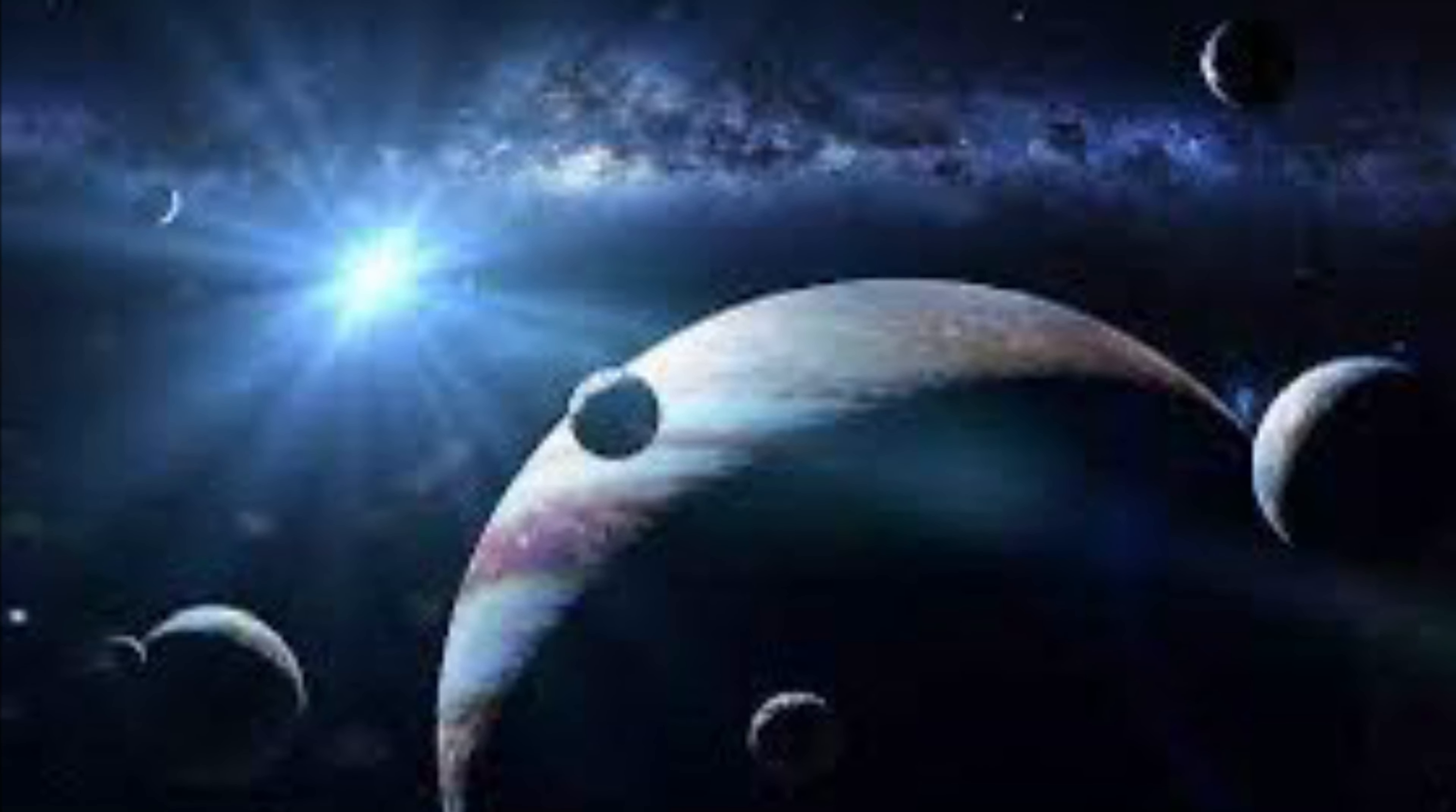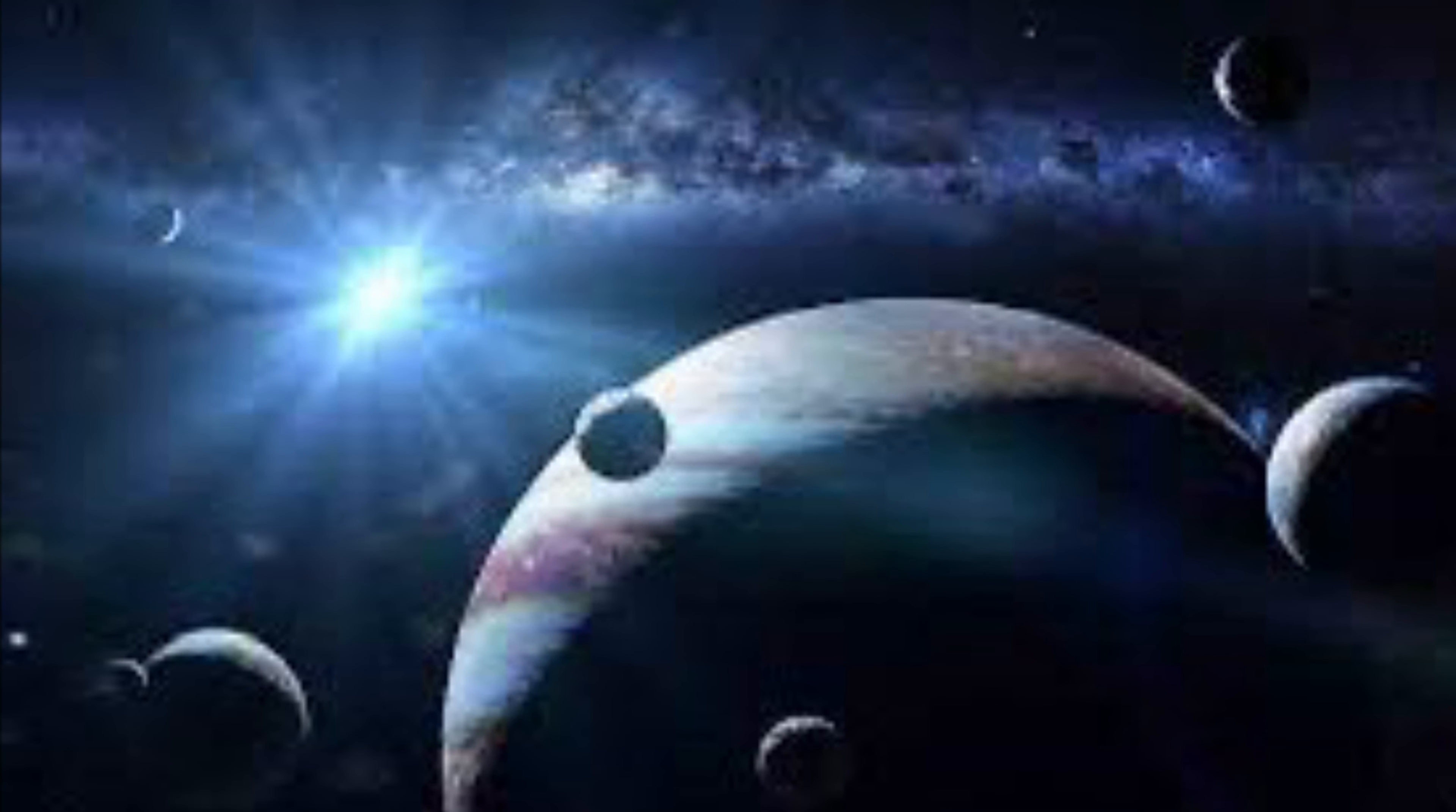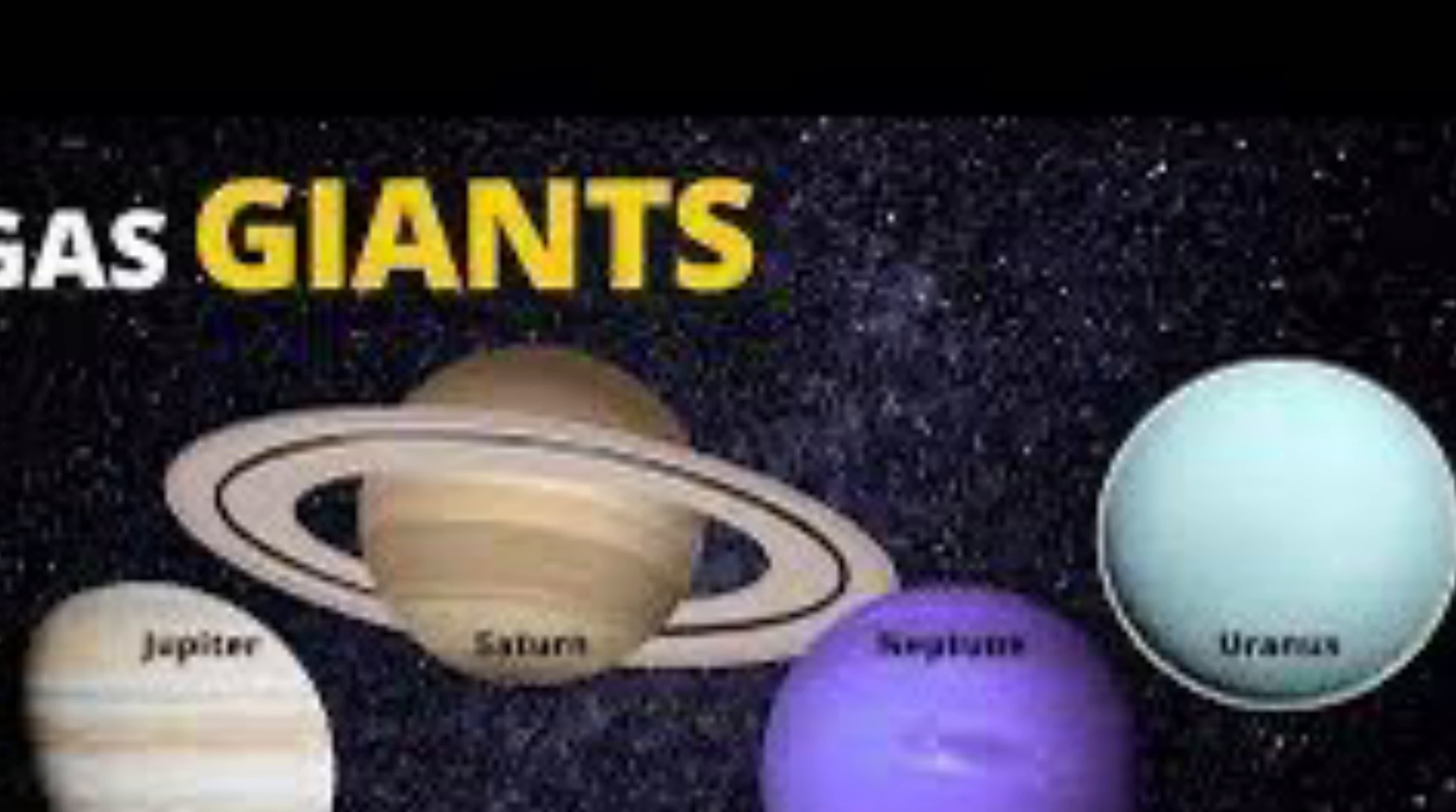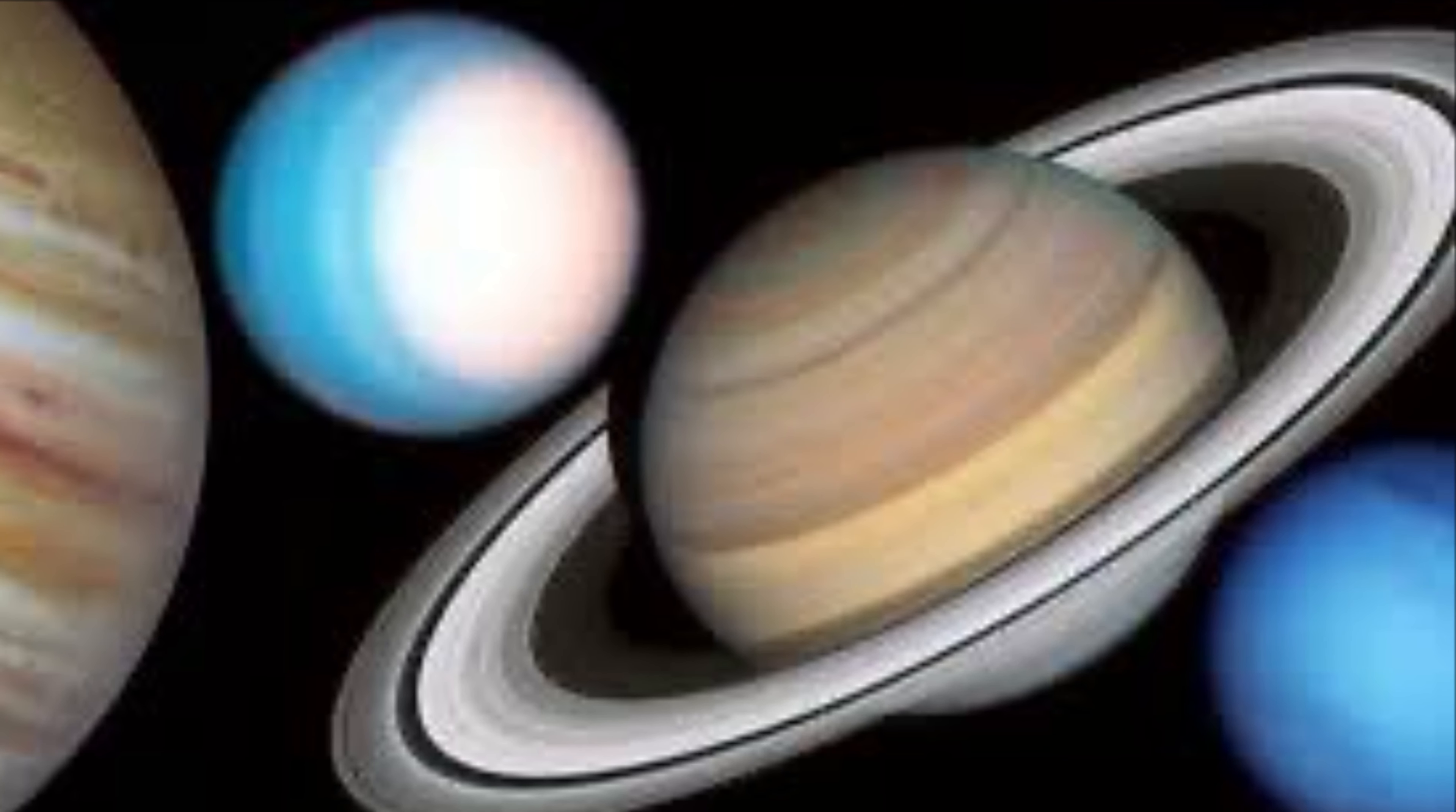Whereas when we compare to the outer planets, they are very far from the Sun. They are made up of hot gases, mainly hydrogen and helium. They move very slowly, as the example was given of Neptune, which takes 164 years to revolve around the Sun, and also they have rings around them.